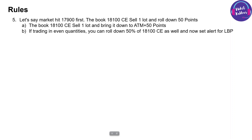Now let's say the market has hit the downside level — it has gone down and hit 17,900 first. You book the 18,100 call. Out of the three lots we sold, take one lot and roll it down by 50 points — meaning bring it to the at-the-money minus 50 points. If you trade in even quantities such as six or four lots, you can bring 50 percent of the quantity down. Then set a new alert for the lower breakeven point.